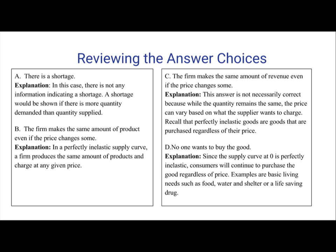B is potentially a correct answer, but we want to go through all the answers first. Answer C: the firm makes the same amount of revenue even if the price changes some. This answer isn't completely correct because while the quantity remains the same, the price can vary based on what the supplier wants to charge, as explained in answer B.